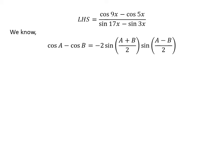We know the famous trigonometry identity: cosine of a minus cosine of b is equal to minus 2 times sine of half of (a plus b) times sine of half of (a minus b). The proof of this trigonometry identity is given in the video appearing in the upper right corner, and the link is also given in the description section.